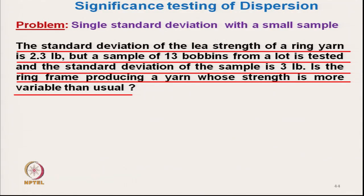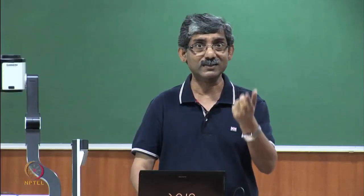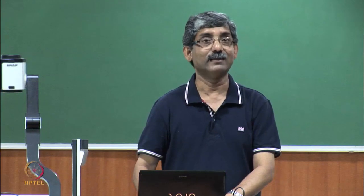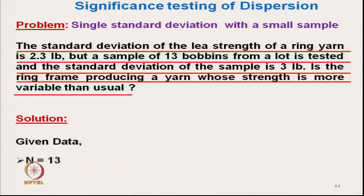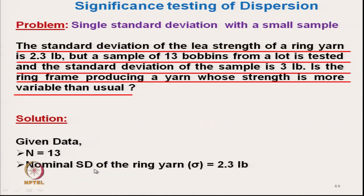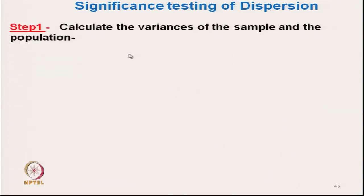Although we can do this analysis using the earlier method, for smaller samples we can use another simpler and faster technique requiring very little calculation: the F-test. The given data is: n = 13, nominal standard deviation = 2.3, and sample standard deviation = 3. For the F-test we calculate the variance, as F is the variance ratio.